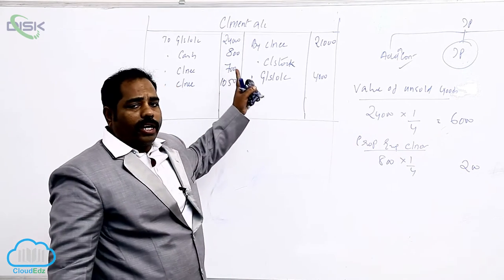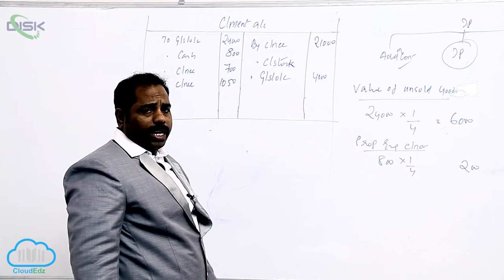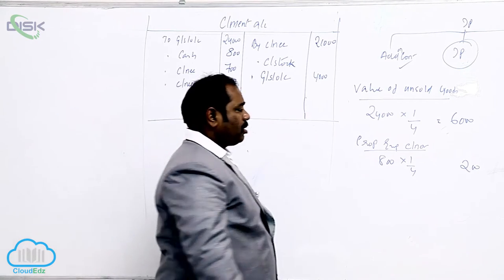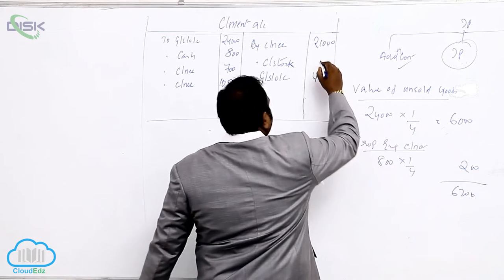Consigner expense, did he mention non-recurring expense or direct expense? No. He has given you selling expense, so selling expense is not considered as non-recurring expense. So 6,200 is by consignment stock.